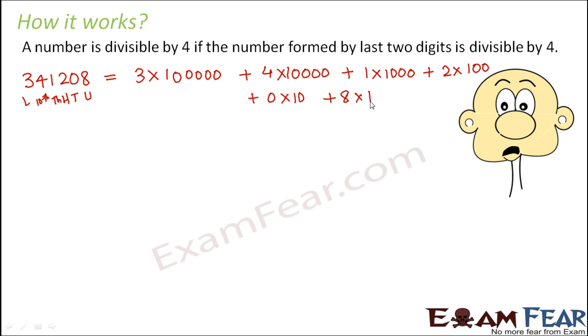Now what we do? In case of 3, we wrote 1000 as 999 plus 1 because 999 was divisible by 3. But in this case, we want to check the divisibility by 4. So we will follow a different trick.